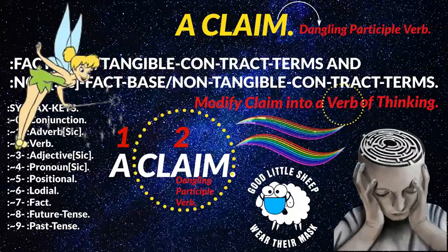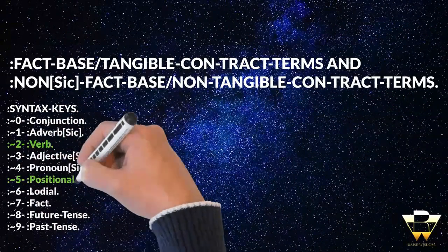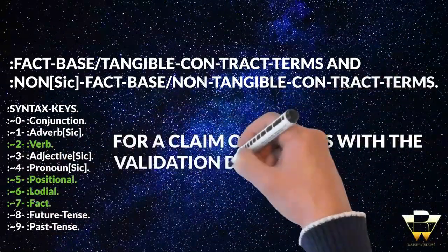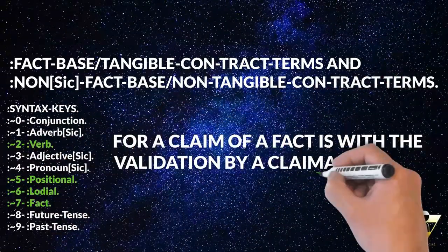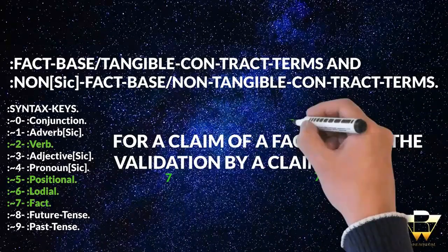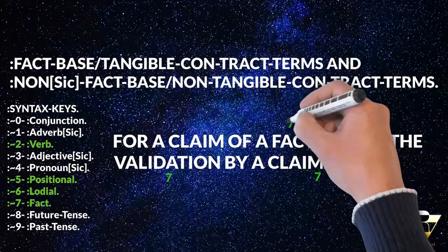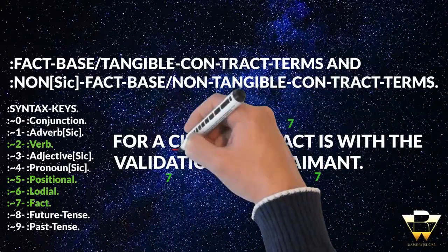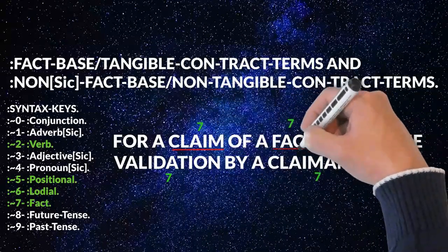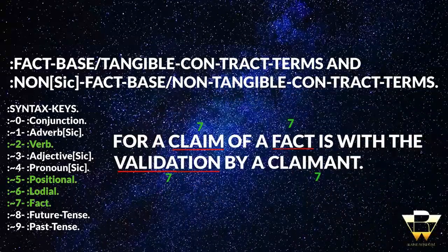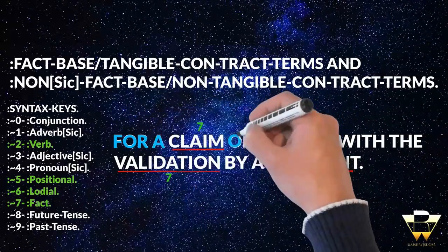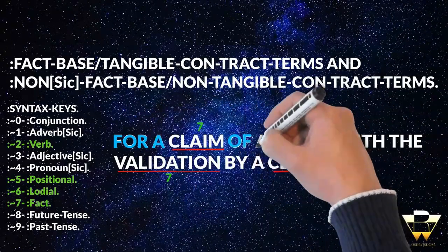Now, we could make a correct sentence structure: 'For a claim of the facts is with the validation by a claimant.' That's a correct sentence structure. All of these facts — and I'll underline the facts — have been positioned correctly because they have positionals and lonials setting them up.